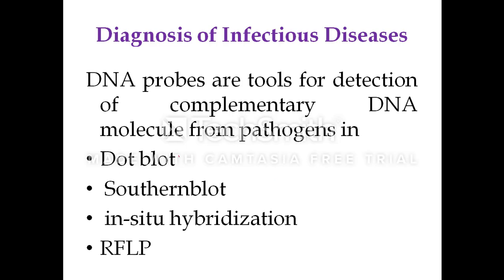These probes are used in certain hybridization techniques like dot blot technique, where the DNA from the infected individual is impregnated or bound to the surface of an inert material in the form of dots. To these dots, we hybridize the probes, which are labeled either with radio labeling or by fluorescent dyes. In Southern blotting, the DNA isolated from the infected individual is separated and transferred to an inert membrane, and to that we hybridize the probes.